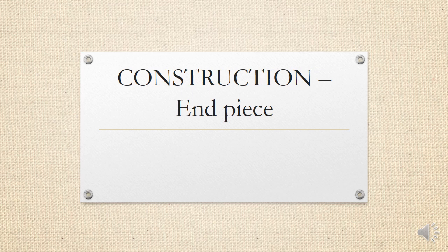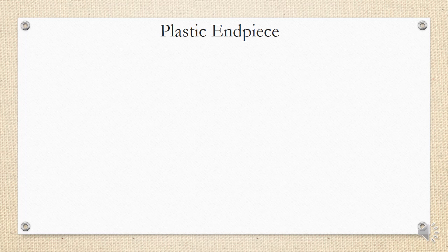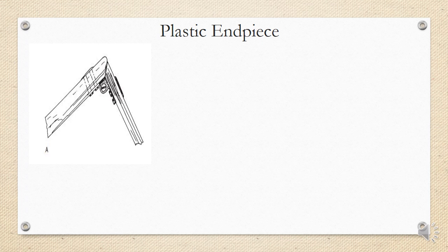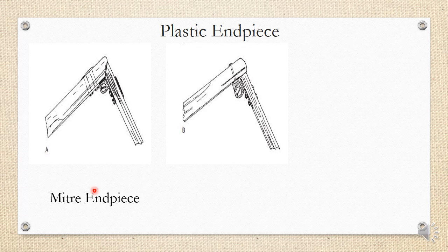Next is end piece construction — the junction between the temple and the frame front. For plastic end pieces, classification is based on the angle between the frame front and the temple. The first type is the mitre plastic end piece, where the frame front and temple meet at a 45-degree angle, so the temple does not come up to the full front of the frame.